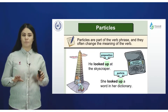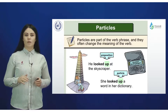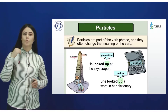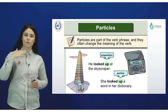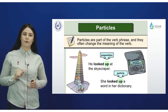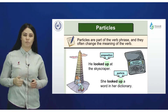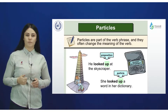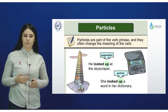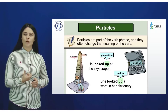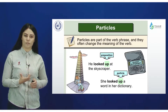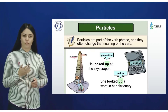Let's compare preposition and particle. As a preposition: 'He looked up at the skyscraper' — here 'up' shows direction. As a particle: 'She looked up a word in her dictionary' — here 'look up' gives the meaning of another verb entirely.